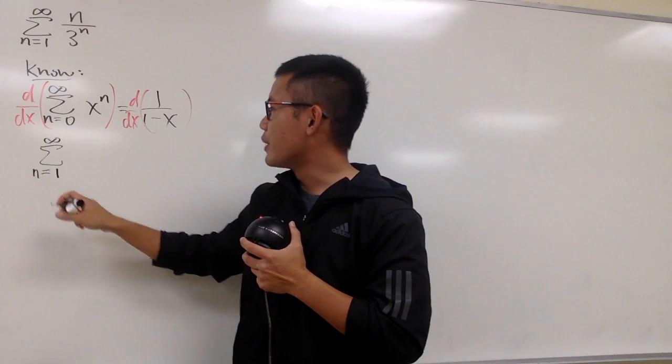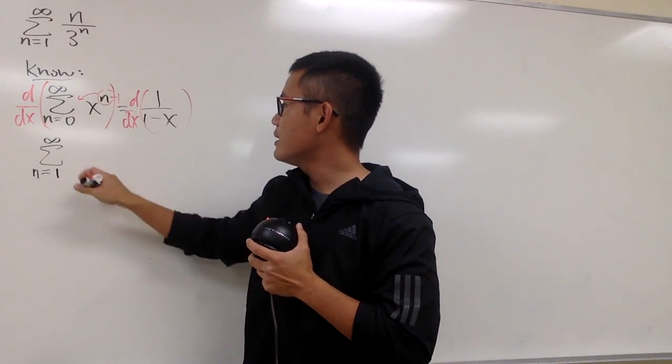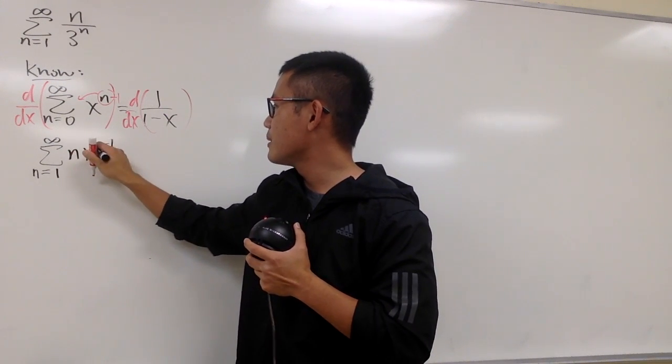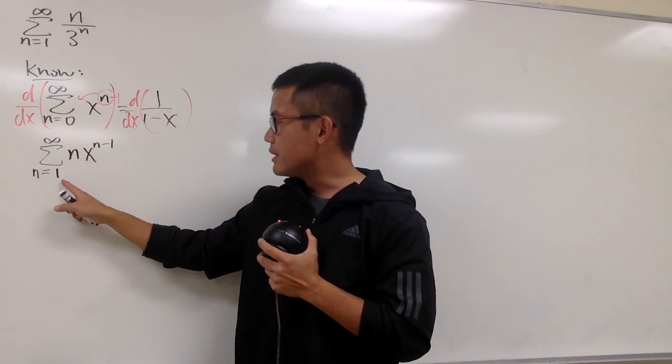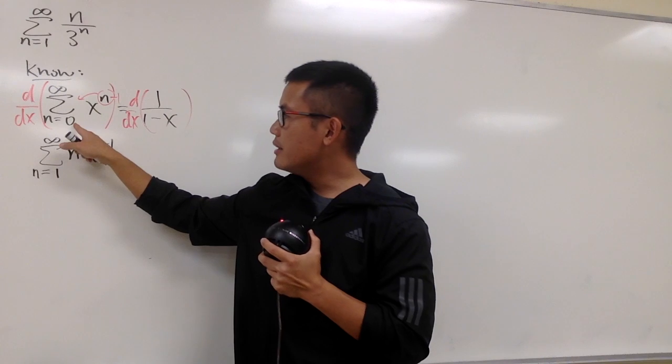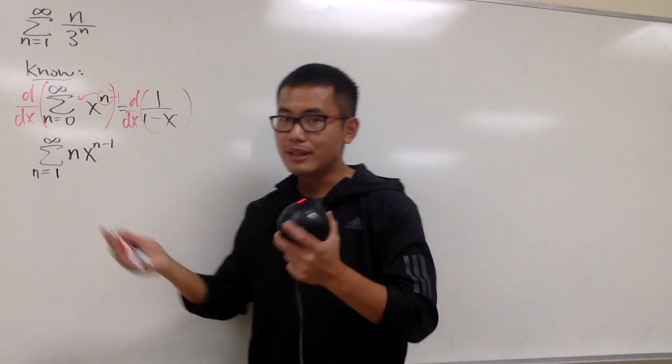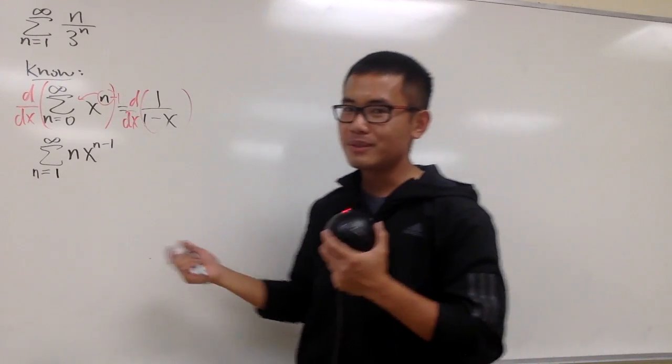And then we have infinity right here, and we can just bring the power to the front, minus 1, so you see this is n x to the n minus 1 power. Another way to look at here, n equals 1, is because if you kept it n equals 0, plugging 0 into here, well, that just contributes 0. That's why n should start with 1, cleaner this way.